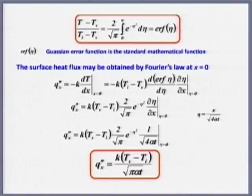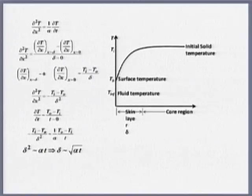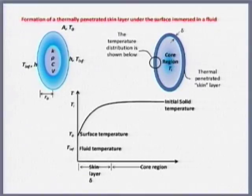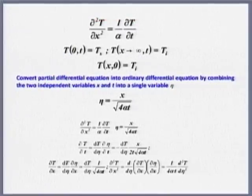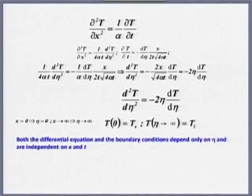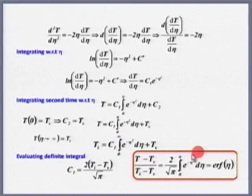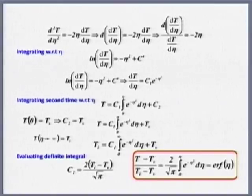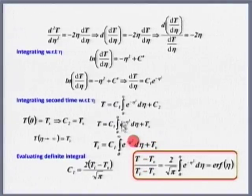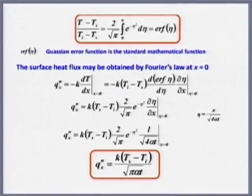So q'' = k(T_s − T_i)/√(παt). The factor of 4 was introduced in η = x/√(4αt) as a mathematical convenience — without it you would keep having extra square root terms in the argument of the error function. With 4, the expression comes out cleanly as 2/√π times the integral, matching the standard definition of the error function.